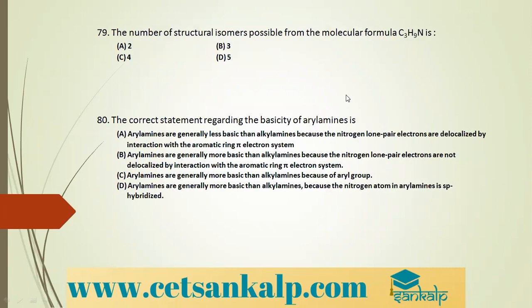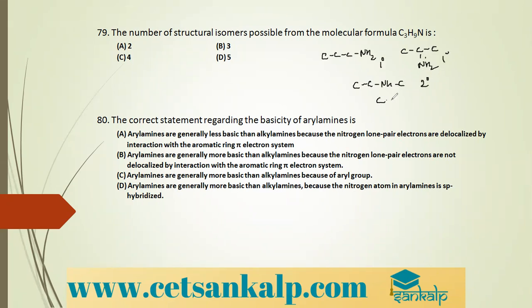Q79: Number of structural isomers for molecular formula C3H9N. We have: CH3CH2CH2NH2 (n-propylamine, primary), CH3CH(NH2)CH3 (isopropylamine, primary), CH3CH2NHCH3 (secondary amine), and (CH3)3N (tertiary amine). Altogether four structural isomers are possible. The first three are also examples of functional isomers.